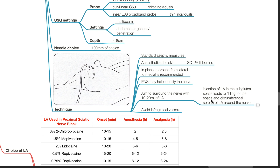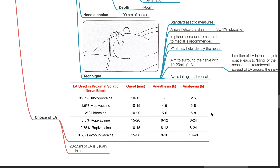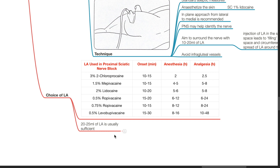Choice of local anesthetic: 20–25 mL is usually sufficient. LA options for proximal sciatic nerve block: 3% 2-chloroprocaine — onset 10–15 min, anesthesia 2 hours, analgesia 2.5 hours. 1.5% mepivacaine — onset 10–15 min, anesthesia 4–5 hours, analgesia 5–8 hours. 2% lidocaine — onset 10–20 min, anesthesia 5–6 hours, analgesia 5–8 hours. 0.5% mepivacaine — onset 15–20 min, anesthesia 6–12 hours, analgesia 6–24 hours. 0.75% ropivacaine — onset 10–15 min, anesthesia 8–12 hours, analgesia 8–24 hours. 0.5% bupivacaine — onset 15–30 min, anesthesia 8–16 hours, analgesia 10–48 hours.